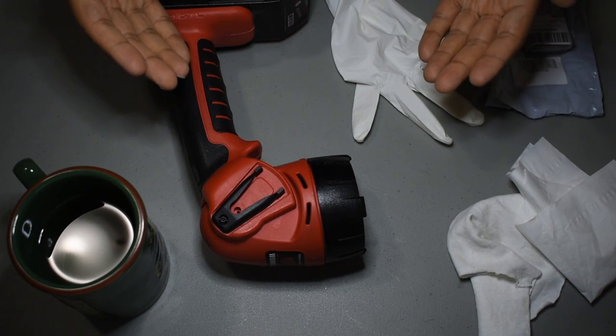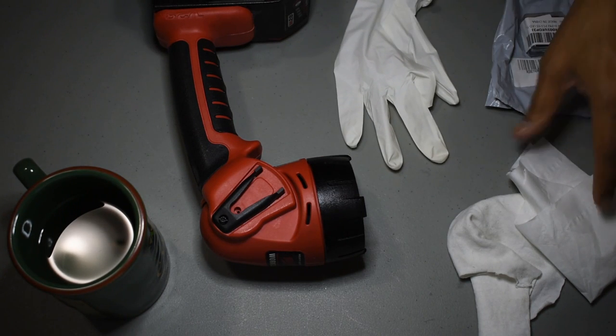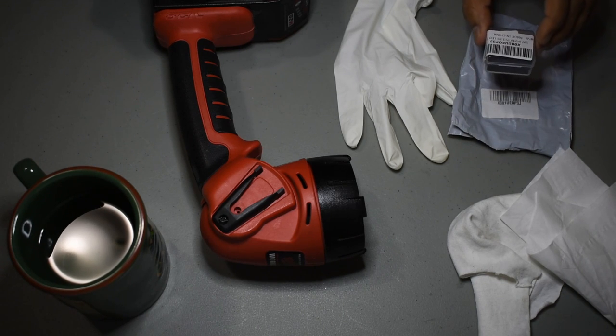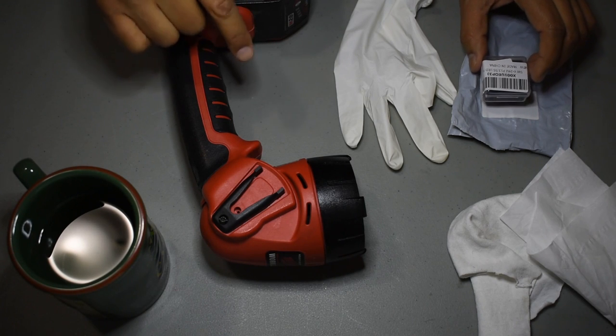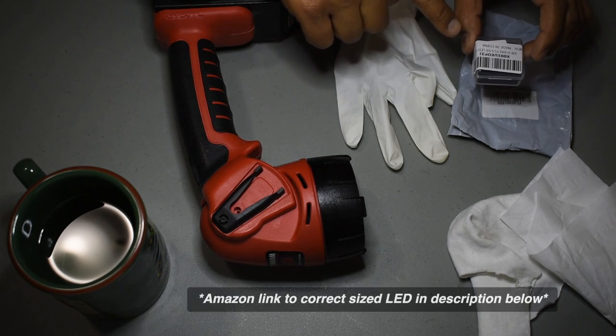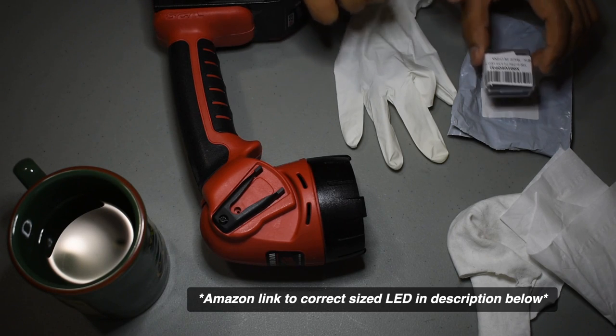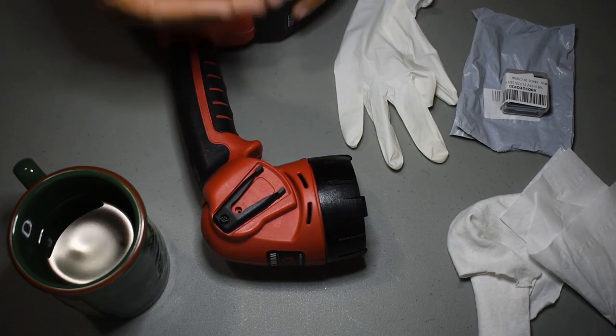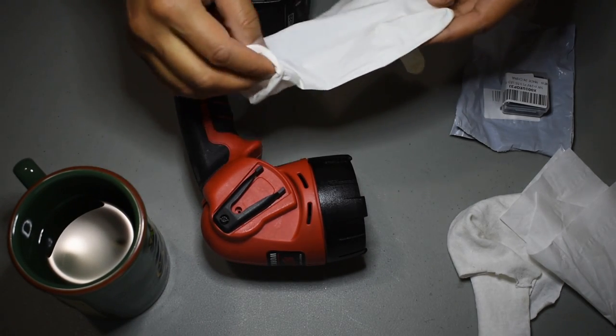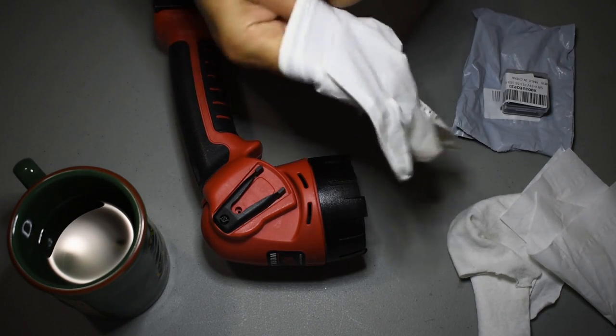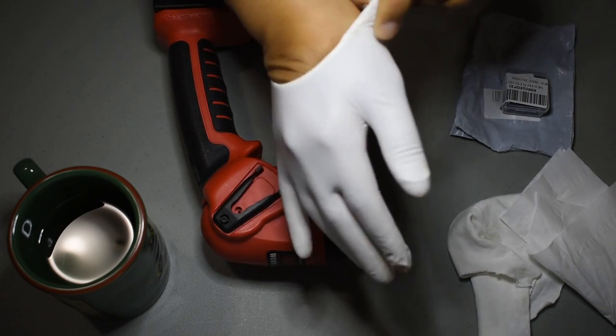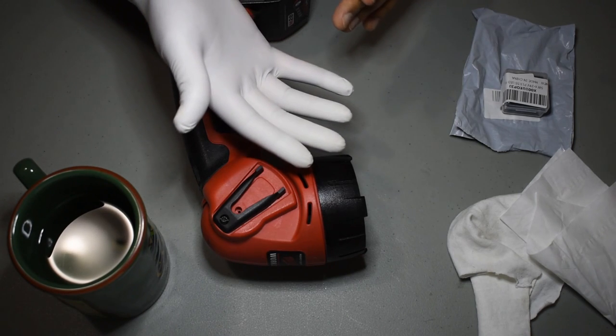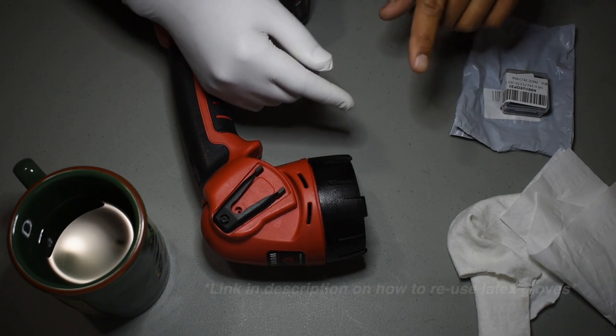For this quick tip video, what you'll need is one latex glove, some Kleenex or a rag, and the replacement LED. I'll put a link in the description below indicating where you can purchase this LED for a fairly decent price, and of course the M28 incandescent flashlight that you're wishing to convert. If you feel bad about just using one glove, I reuse my glove. I have another video which shows how you can reuse your latex gloves and I'll leave a link in the video card above as well as in the description below.